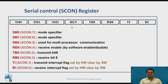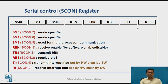There are three special function registers related to serial communication. The first important one is the SCON register; we will discuss its bit format. Along with SCON, there is SBUF which we already discussed. There is also the PCON register, which is primarily related to power control, but it has one bit called SMOD that is used for serial communication baud rate selection.